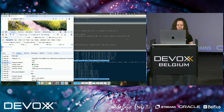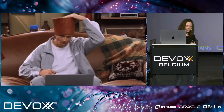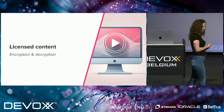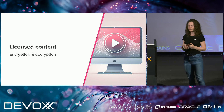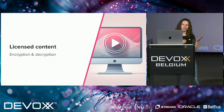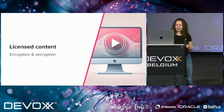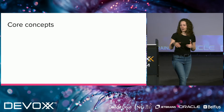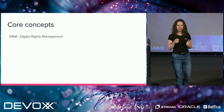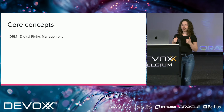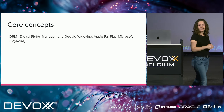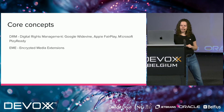That was the adaptive bitrate demo. Now let's quickly talk about encrypted content. Encryption is very important because content providers must stay compliant. Before jumping into the encryption and decryption processes, I want to go over a few core concepts. First is DRM — Digital Rights Management — a technology used to protect content from unauthorized use and control its distribution. There are three main DRMs: Google Widevine, Apple FairPlay, and Microsoft PlayReady.